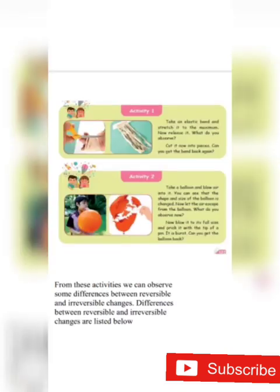Okay children, we'll do two activities. Take an elastic band and stretch it to the maximum, then release it. What do you observe? The elastic band came back to its normal position — so that is a reversible change. Then cut it into two pieces. Can you get the band back again? No, we can't get the band back. So this is called an irreversible change.